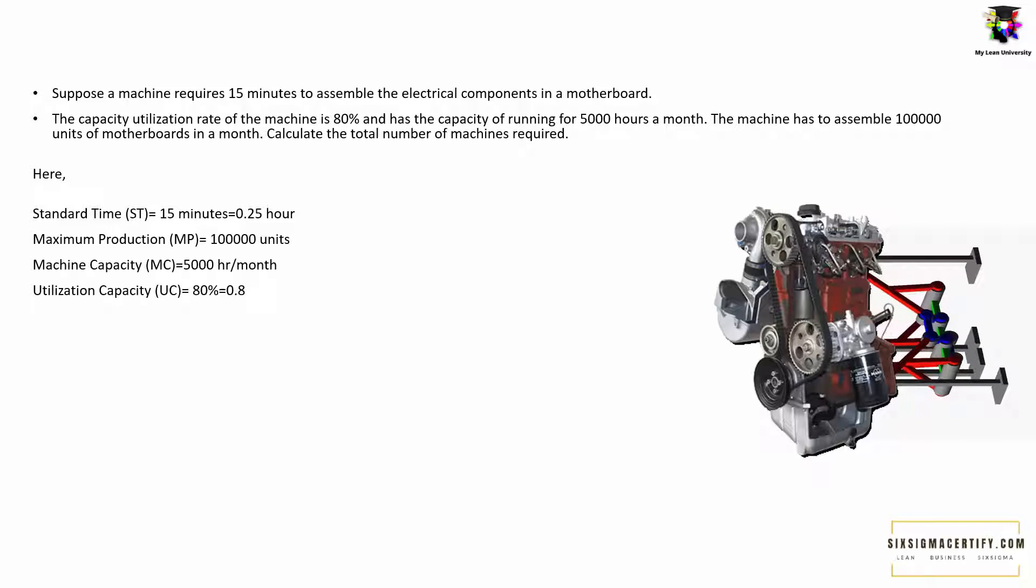The maximum production is 100,000 units. The machine capacity is given, that is 5000 hours per month, and the utilization capacity or UC is 80%. That means in decimal form it is 0.8.